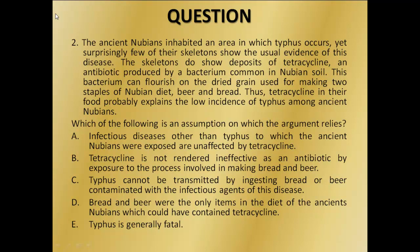Let's move on to the second question. The ancient Nubians inhabited an area in which typhus occurs. Yet, surprisingly, few of their skeletons show the usual evidence of the disease. The skeletons do show deposits of tetracycline, an antibiotic produced by a bacterium common in Nubian soil. This bacterium can flourish on the dried grain used for making two staples of Nubian diet, beer and bread. Thus, tetracycline in their food probably explains the low incidence of typhus among ancient Nubians.